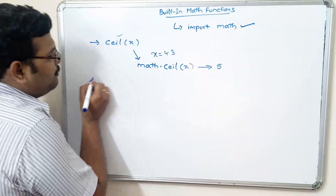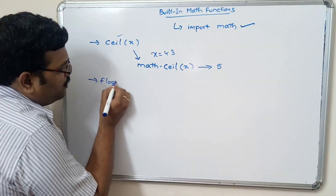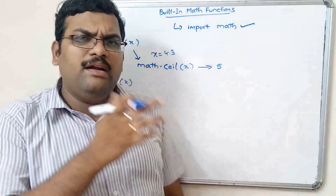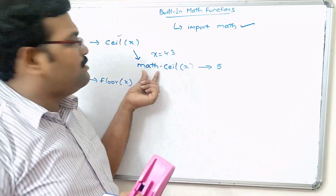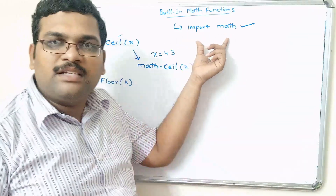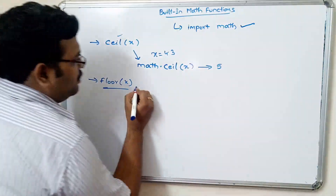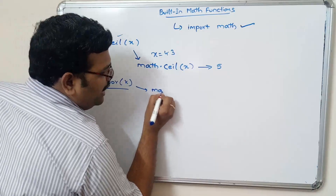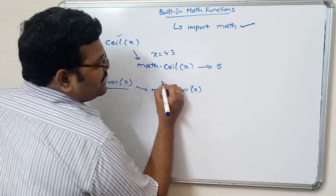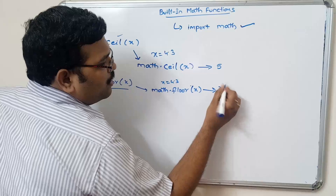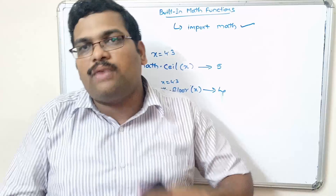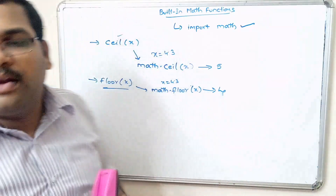Similarly, the floor function — floor(x). For this function also, all predefined mathematical functions should use the math package, and before that we have to import the math package in our Python script. For implementing floor, we write math.floor(x). If x equals 4.3, we will get 4 as a result, because floor means we consider the lower value by eliminating the fractional part.